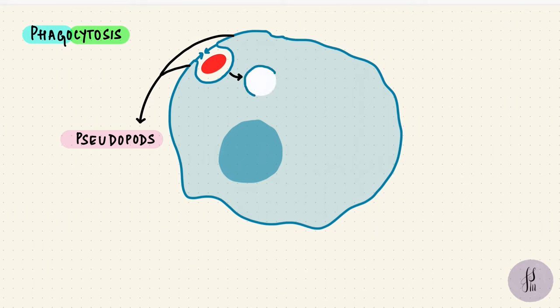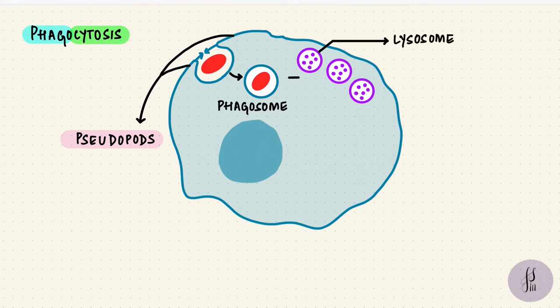Now this cavity, lined by that phospholipid bilayer, is called a phagosome and it's got the engulfed material inside. That needs to be broken down. Among the organelles, which one does that? The lysosome. The phagosome fuses with the lysosome to form a phagolysosome.